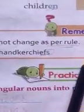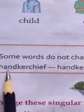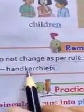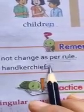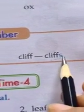Remember, some words do not change as per the rule. Like handkerchief — this is a handkerchief and it ends with F, but it will not change as per the rule. We will add S and it will become handkerchiefs. This is cliff, and it will become cliffs.